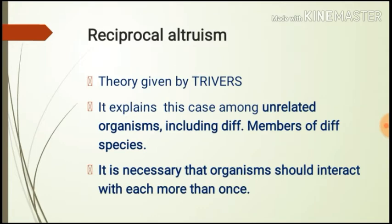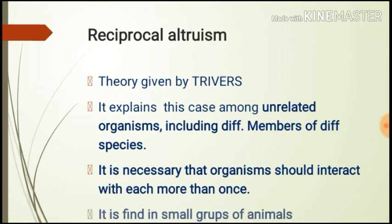This type of behavior can be adaptive if the aided individual returns the favor in the future. It applies when the recipient of altruistic behavior would also give back to the donor. It is necessary that individuals interact with each other more than once and have the ability to recognize individuals with whom they have interacted in the past. If individuals interact only once and never meet again, there is no possibility of return benefit. However, if individuals encounter each other frequently and are capable of identifying and punishing cheaters who have refused to help in the past, then helping behavior can evolve. This evolutionary mechanism is most likely to work where animals live in relatively small groups, increasing the likelihood of multiple encounters.